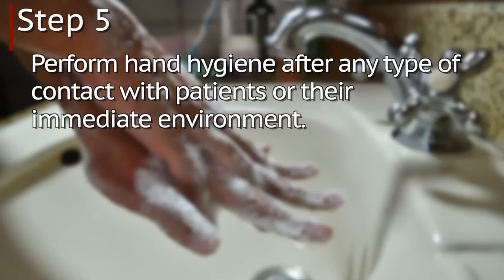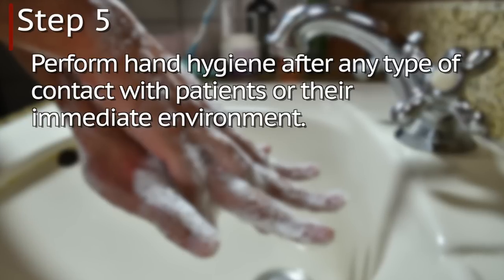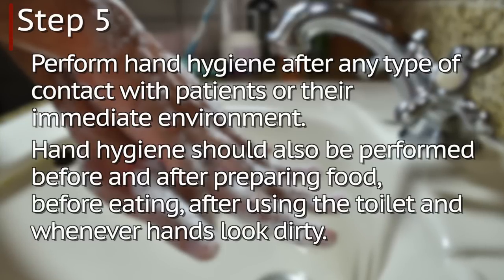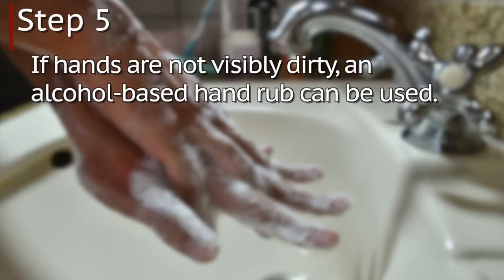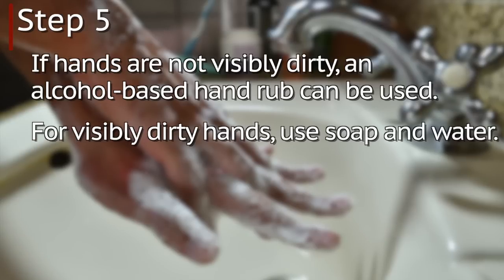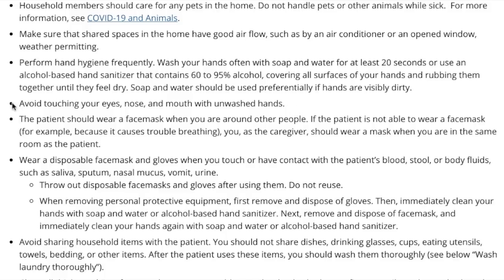Step five: perform hand hygiene after any type of contact with patients or their immediate environment — in other words, hand washing. Hand hygiene should also be performed before and after preparing food, before eating, after using the toilet, and whenever hands look dirty. If hands are not visibly dirty, an alcohol-based hand rub can be used. For visibly dirty hands, use soap and water. The CDC also advises avoiding touching your eyes, nose, and mouth with unwashed hands.